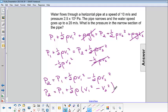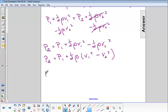Now we can plug in all our values. So p1 is equal to 2.5 times 10 to the 5th pascals. The density of water is 1000 kilograms per cubic meter.